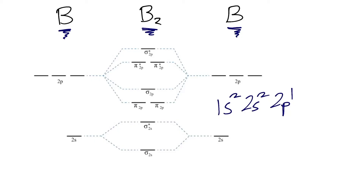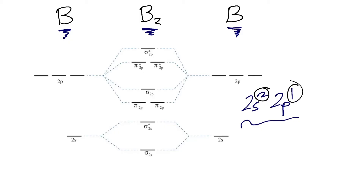We're only interested in the valence electrons because that's what's going to be forming our bonds, so we can pretty much ignore our 1s2. The electrons we're going to be interested in adding into our molecular orbital diagram are those associated with our valence electron shell, which will be the n equals 2 subshell. We can see from our electron configuration that we have two electrons in the 2s orbital and one electron in the 2p orbital, so each individual boron atom will have three electrons.